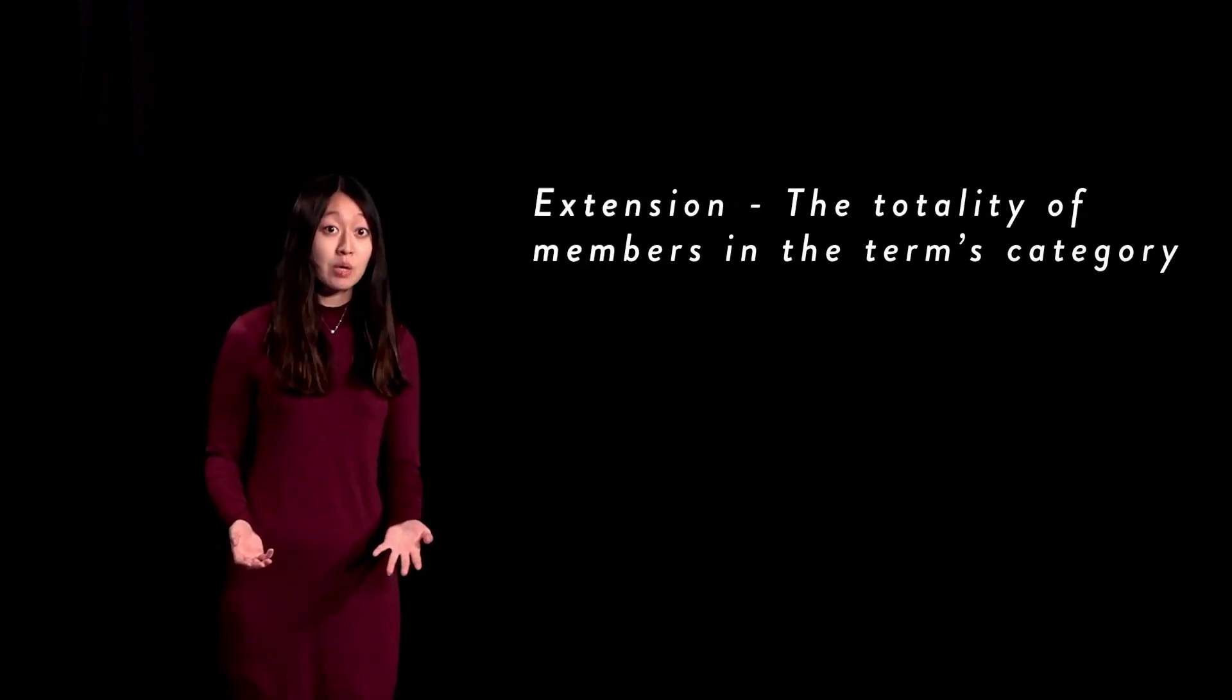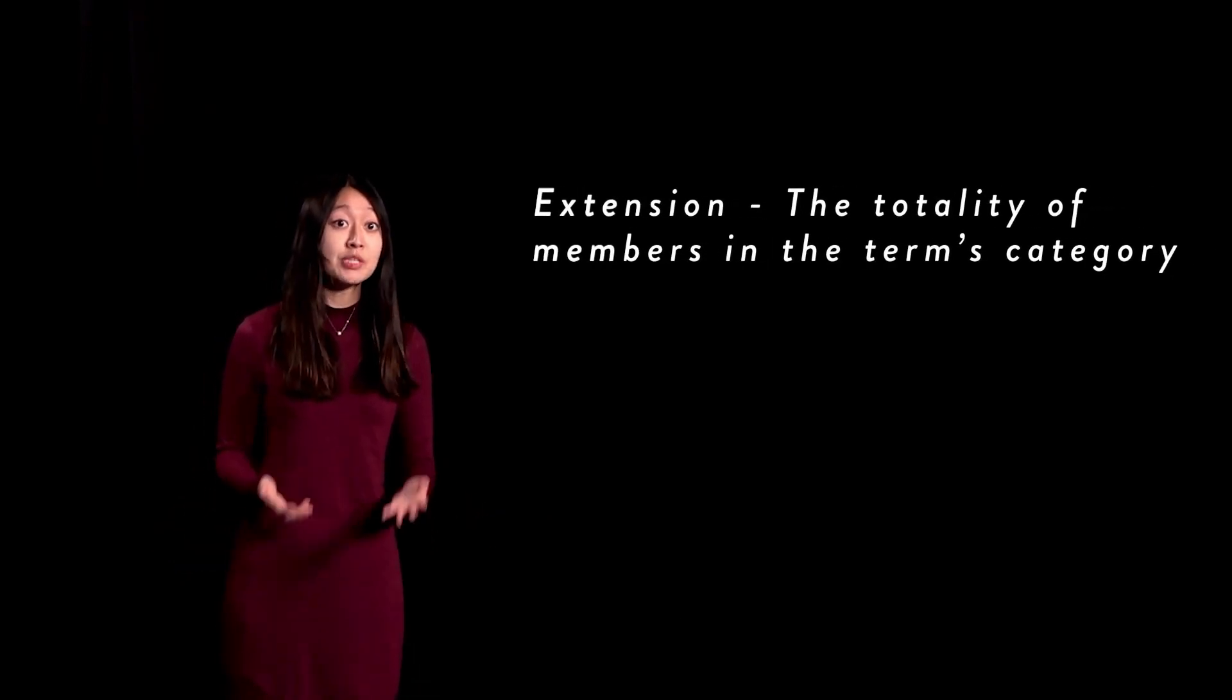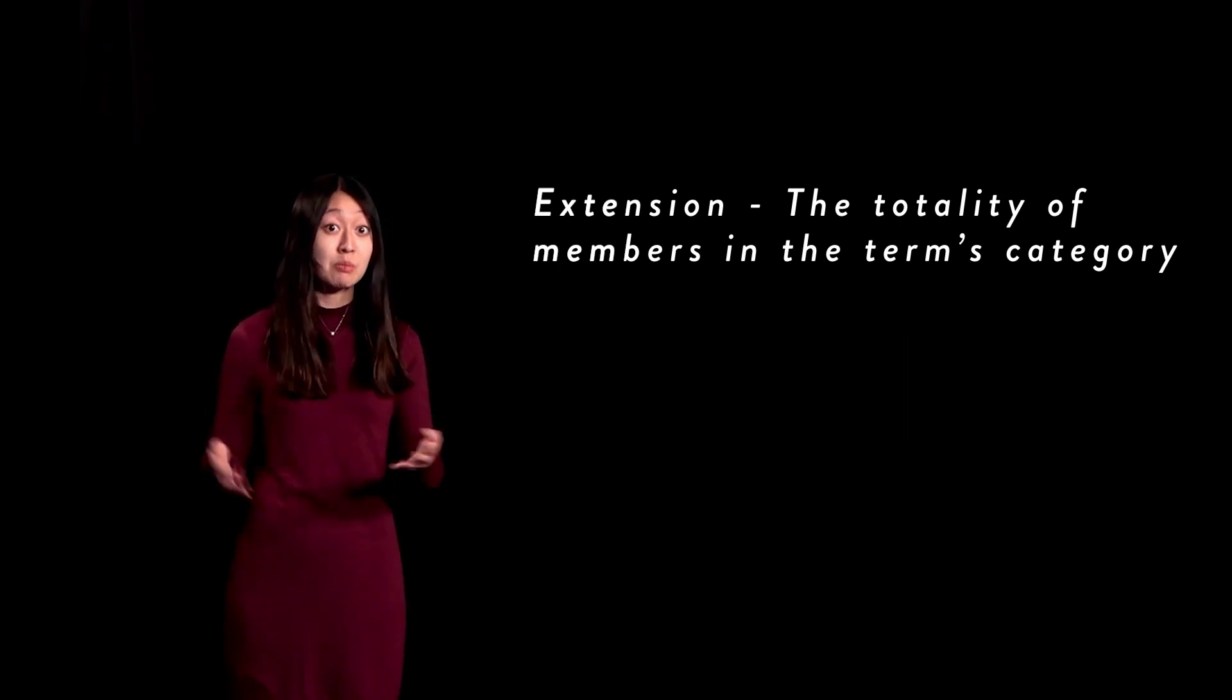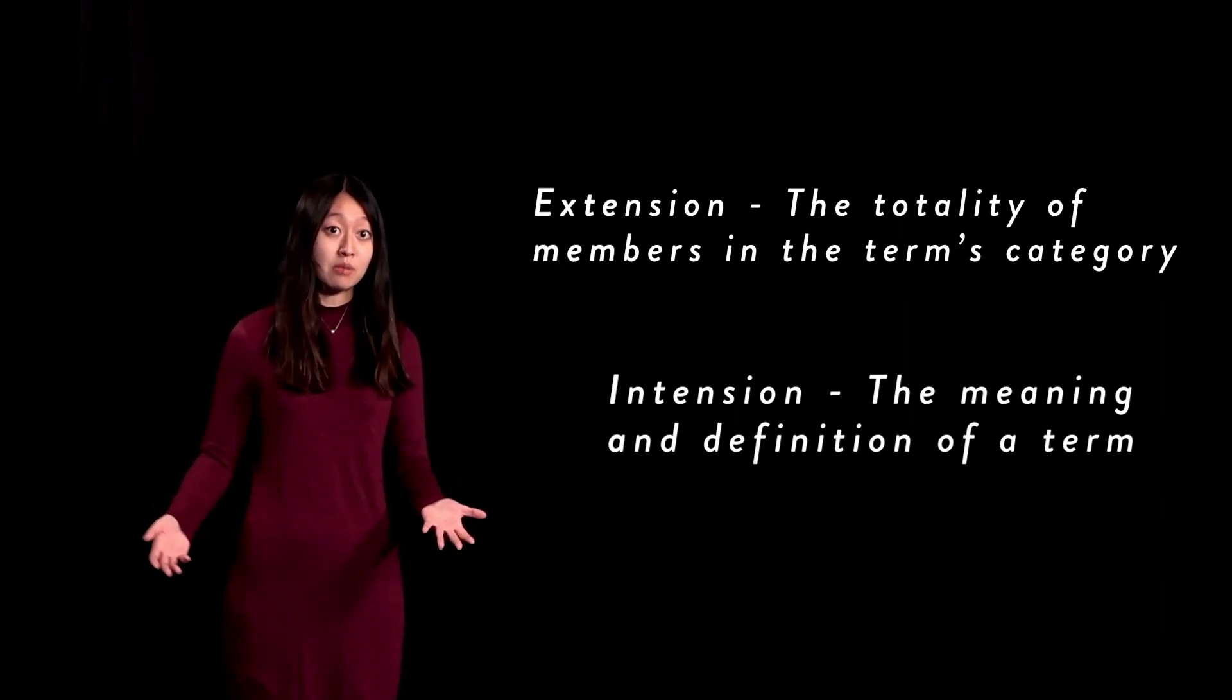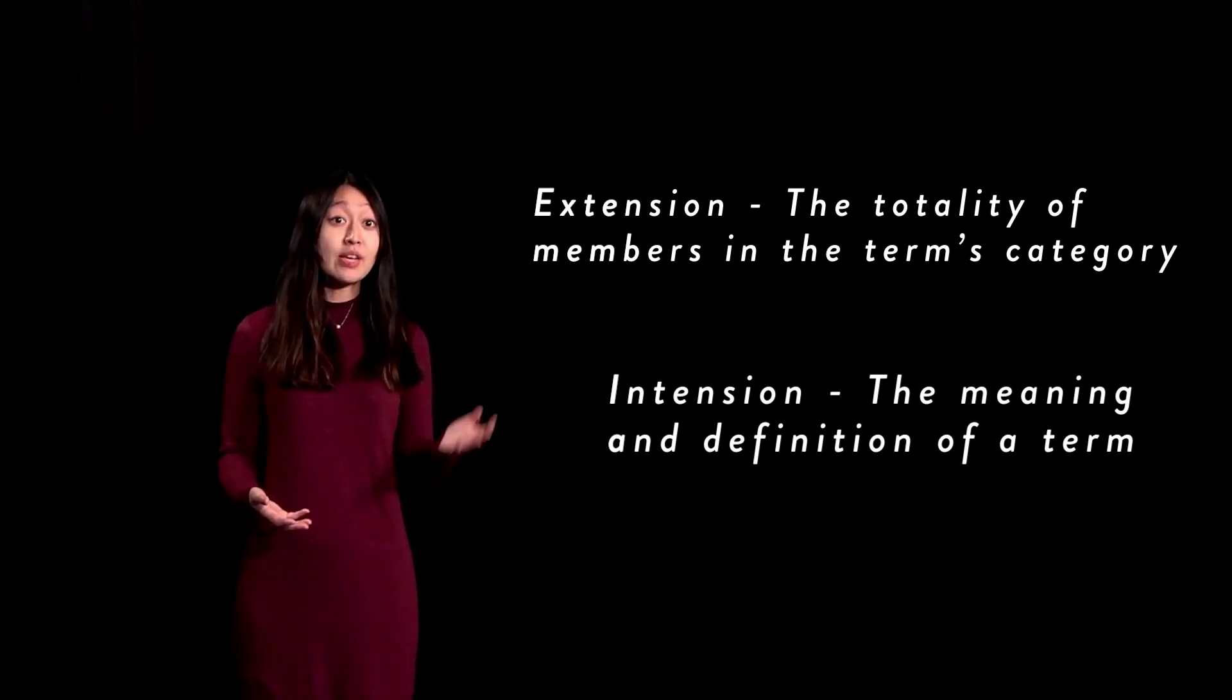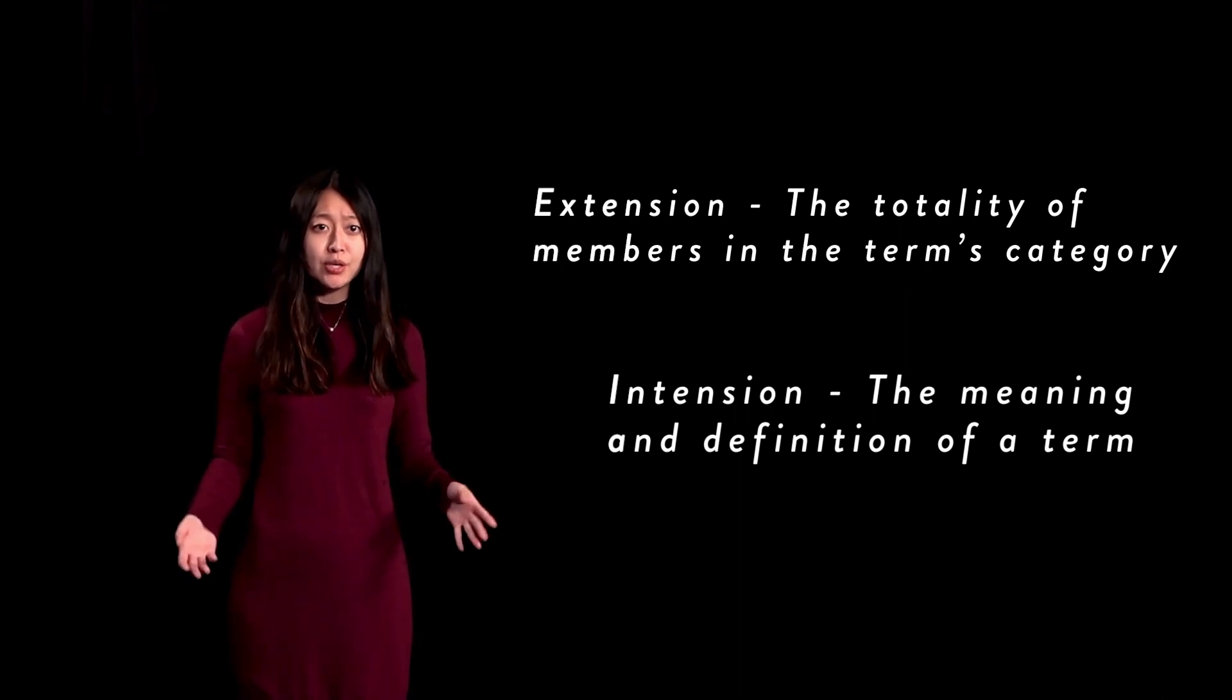Now we can understand the following definitions. Extension of a categorematic term is the totality of all particular members of the category that the term refers to. The intension of a categorematic term is the meaning and the definition of the term, the description of the common property or properties that all members of the extension of the term share. It's worth noting that the intension of a term can also be thought of as its definition. We can use the two terms interchangeably.